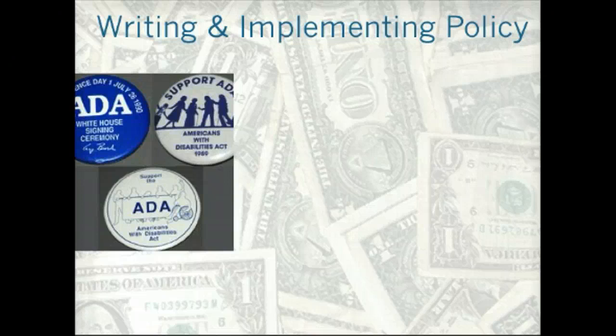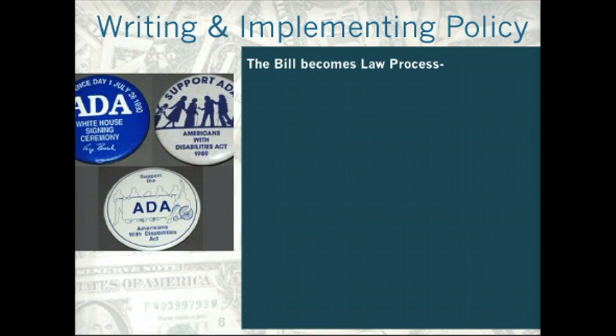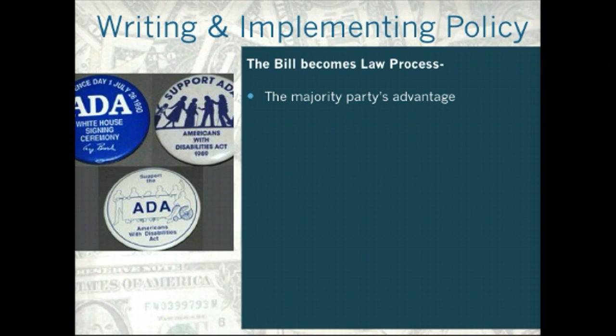Writing and implementing policy — this is the how-a-bill-becomes-a-law process. The majority party has an advantage in writing and implementing policy. Besides the numerical advantage on the floor, the majority party has the Speaker, who can decide with their referral power whether to nurture or kill a bill. They have the chair of all the committees and more seats in the committee, so they have more control over the markup process.